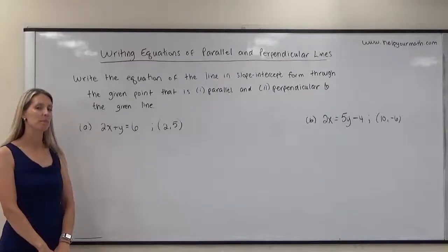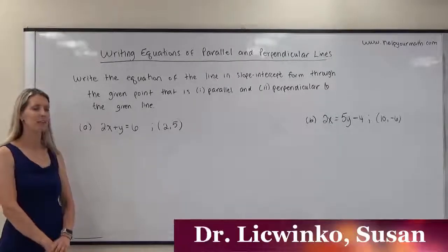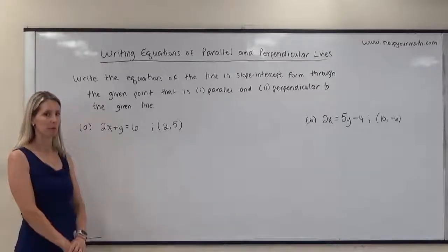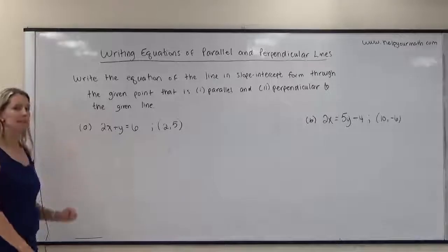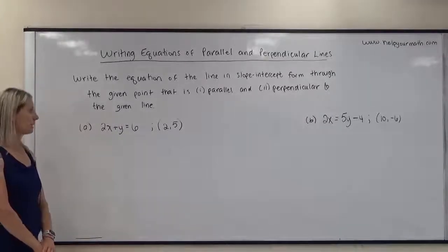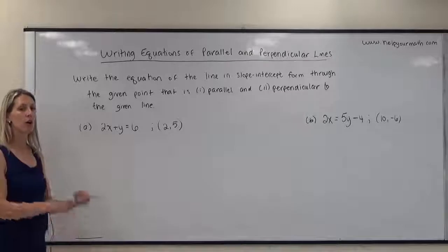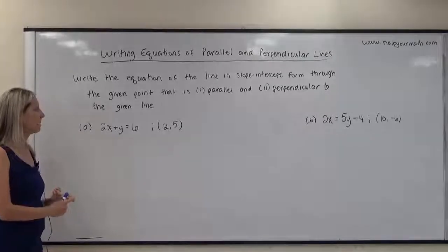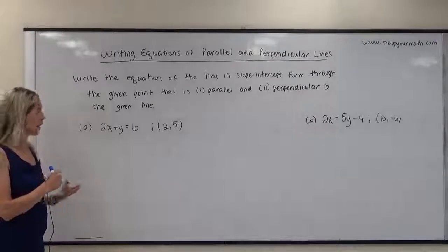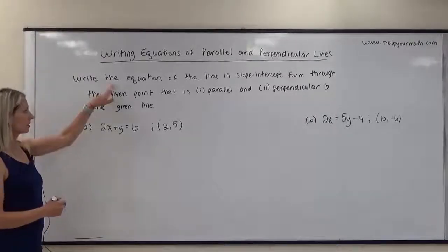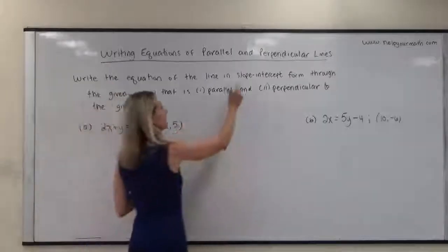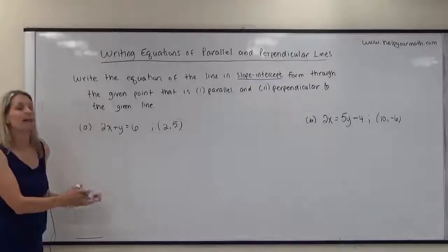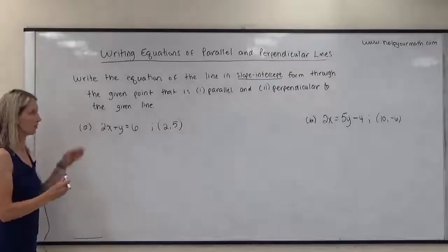We're going to look at writing equations to parallel and perpendicular lines when we're given the equation of one line and a point that passes through the other line. In our first example, we're given the line 2x plus y equals 6, and we want the line parallel to it passing through point (2, 5), and the line perpendicular to it also passing through (2, 5). It specifies the answer must be in slope-intercept form.